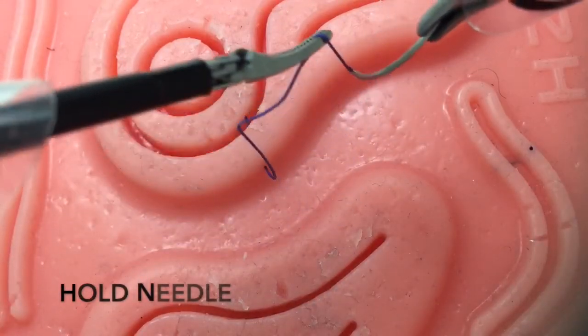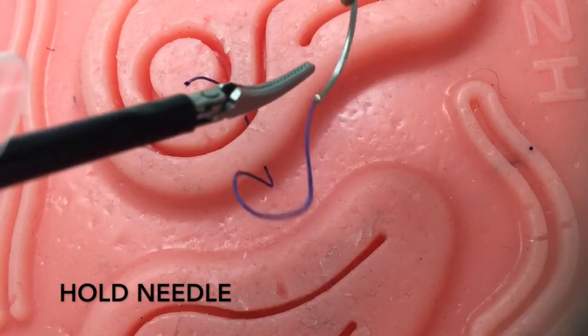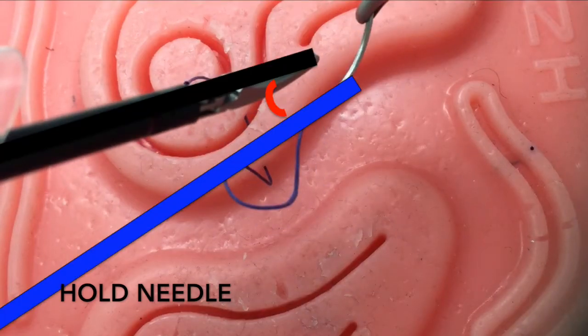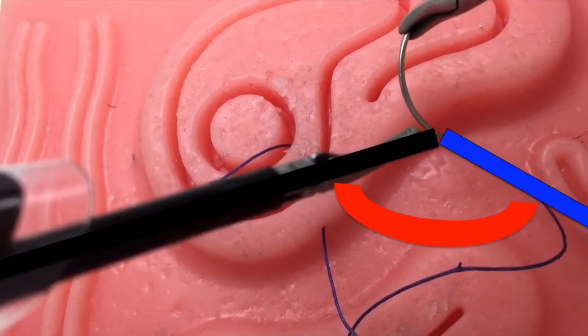For the hold needle technique, always remember to rotate the needle to line up with the suture and orientate it such that the instrument suture angle is minimized. As shown, a large instrument to suture angle makes throwing a knot very challenging.